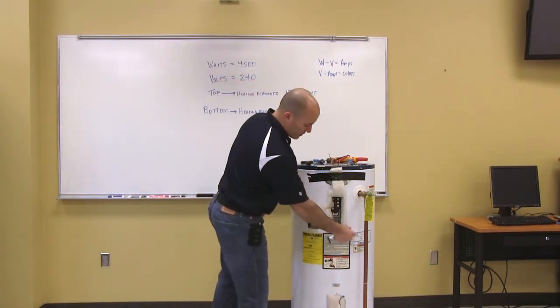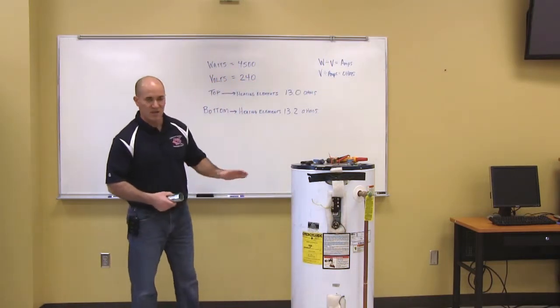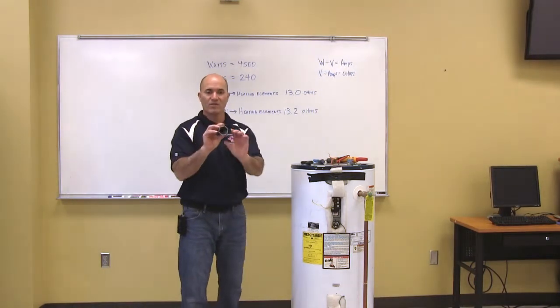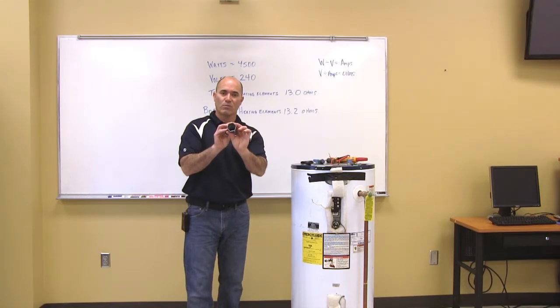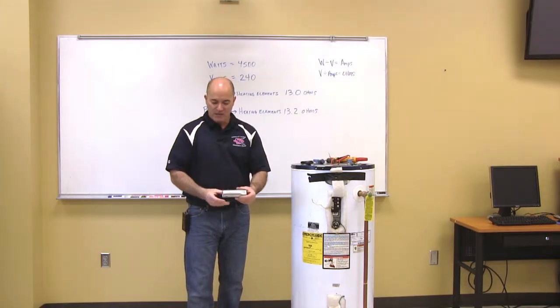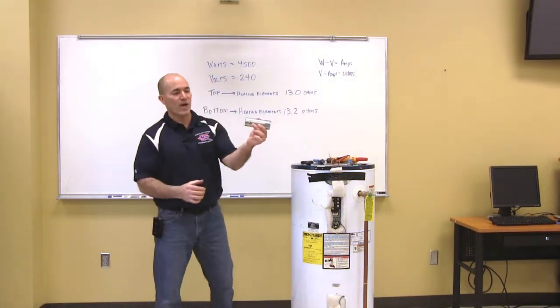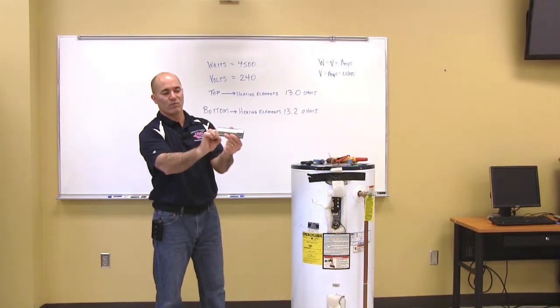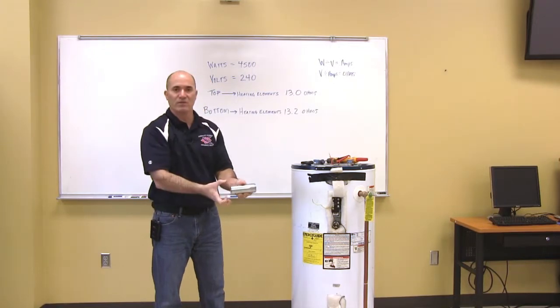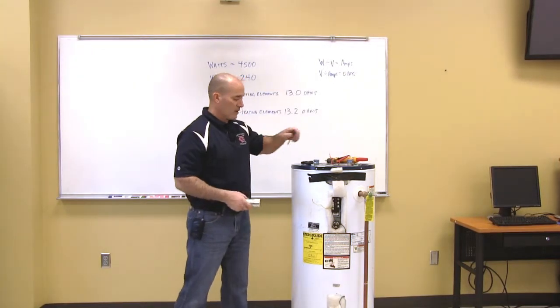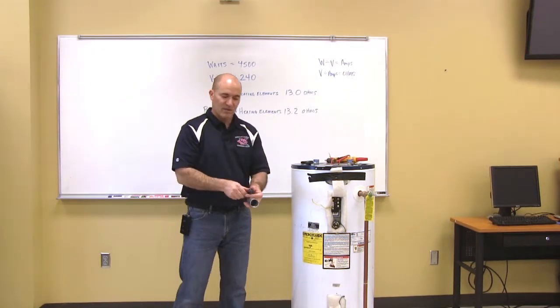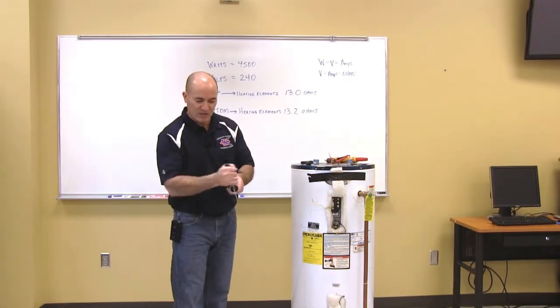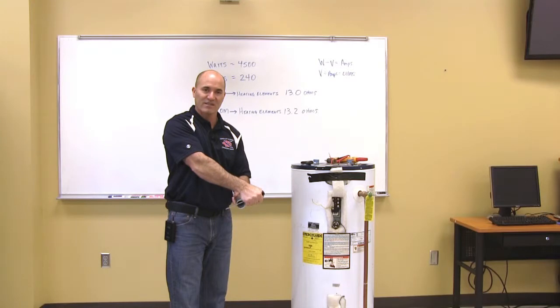So now what I'm going to do is show you how easy it is to take out one of these heating elements. First of all, we've got to have a heating element wrench, and it's just a larger form of a socket. It's got an opening in here, so I can slide either a screwdriver or a wrench through here so I can get torque and turn this. I'll take a screwdriver, slide it through so I can get torque and turn and get this heating element out.